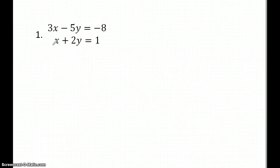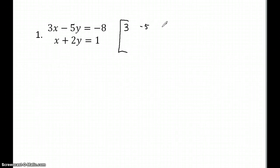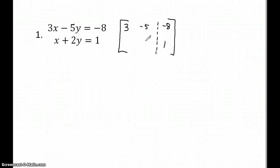First, we want to change this to an augmented matrix. I'm going to put the three here, the negative five here, negative eight. I like to put a dashed line — some teachers do that, some teachers don't — just to indicate where my equal sign is. So I'm putting the coefficients of my system of equations into my matrix. This is called an augmented matrix.